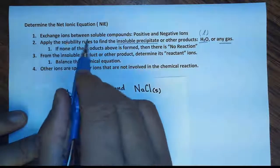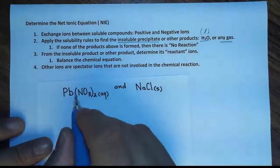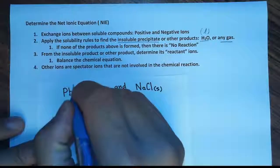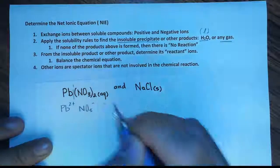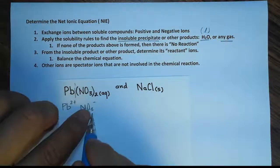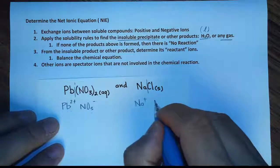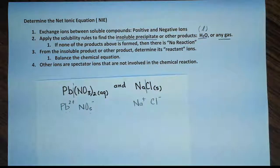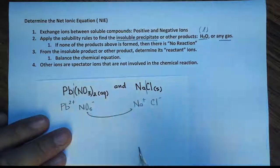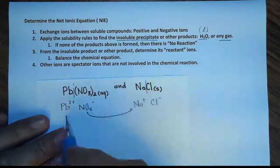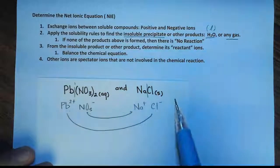The first step is to exchange the ions between the soluble compounds — that is, you combine the positive and negative ions to make a new compound. Lead nitrate can be separated into Pb²⁺ and NO₃⁻, and they exist as aqueous ions. For sodium chloride, we have Na⁺ and Cl⁻. To exchange ions, you combine the positive of one with the negative of the other: this negative pairs with that positive, and this positive pairs with that negative.